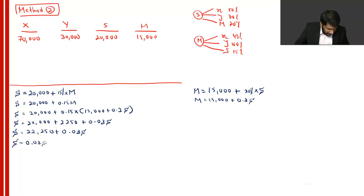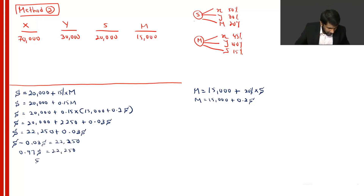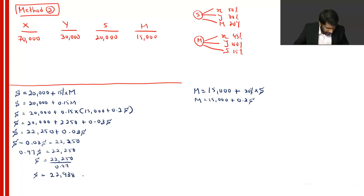Taking 0.03S to the other side: S − 0.03S = 22,250, so 0.97S = 22,250. Dividing both sides by 0.97: S = 22,250 ÷ 0.97 = 22,938.14.